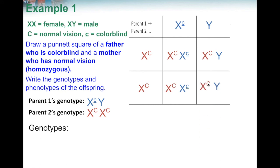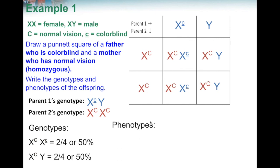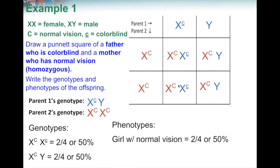Looking at the results of this Punnett square: the genotype X capital-C, X lowercase-c appears in two of the four boxes, so that's 2 out of 4, or 50%. The genotype X capital-C, Y also appears in two of the four boxes, or 50%. For phenotypes, the X capital-C, X lowercase-c boxes represent girls with normal vision — 50%. The X capital-C, Y boxes represent boys with normal vision — also 50%. So no children in this cross are colorblind.